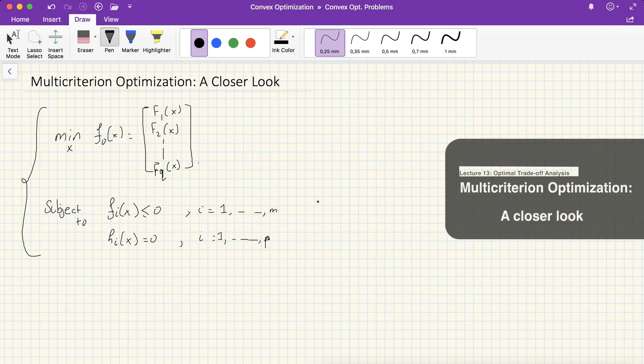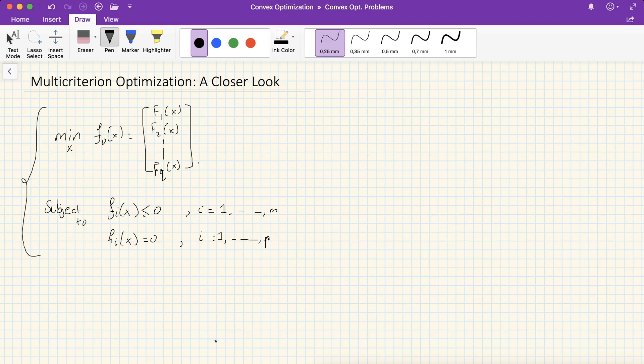To get a better feel of multi-criterion optimization, assume that we don't have an optimal point. Assume that we have Pareto optimal points. That is, in other words, we've got two or more points that are optimal in some sense. We'll state how. But let's say for the moment we have two, X and Y, let's say they're Pareto optimal.